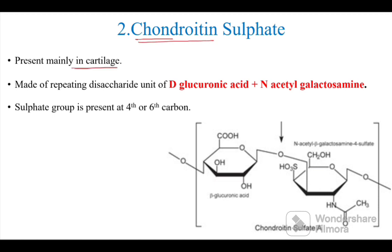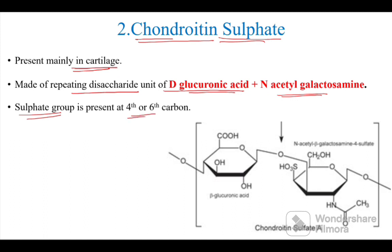Chondroitin sulfate is present mainly in cartilage. It is made of repeating disaccharide units of D-glucuronic acid and N-acetylgalactosamine. As the name suggests, it has a sulfate group present at the fourth or sixth carbon.